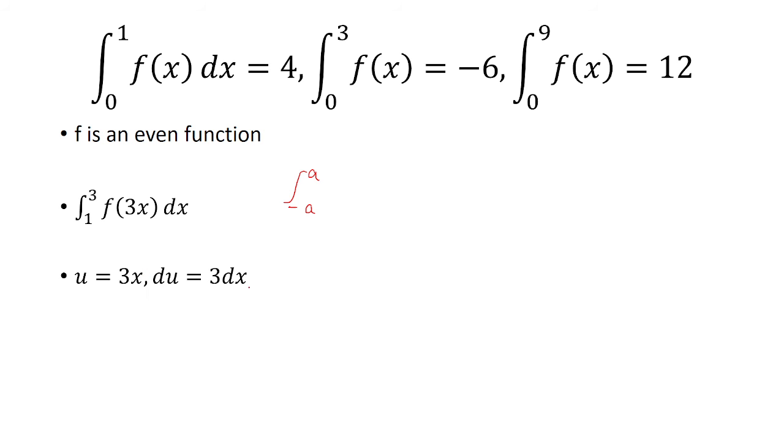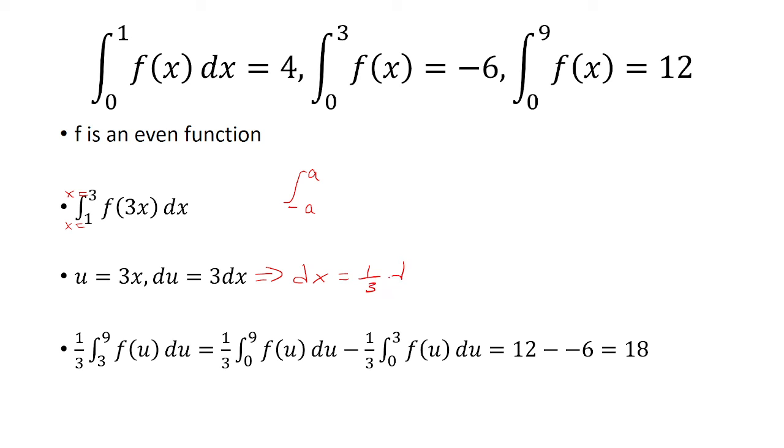When u is 3x, du is 3 dx. So these are in terms of x. x is 1, x is 3. When x is 1, we get 3. When x is 3, we get 9. And here we solve for dx to be 1 third du. So that's why we have a 1 third out here. We change the limits.